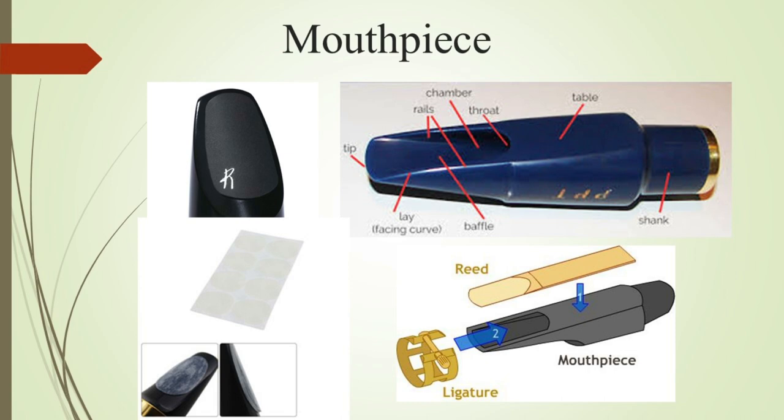Mouthpieces are made up of hard rubber, plastic or metal. They usually come in different sizes and numbers ranging between three to eight, and they are also measured in alphabets A, B, C, D. To start with, you can go for Yamaha C4 or Selmer C-star because of their narrow opening — they are easy to blow. Mouthpiece is quite a vast subject which we will cover in detail in a separate video.